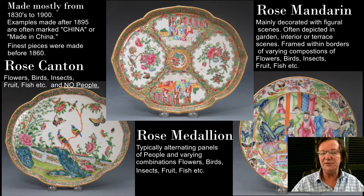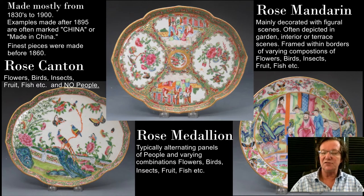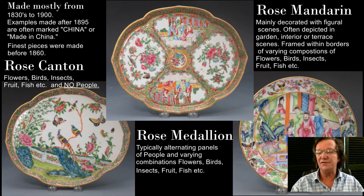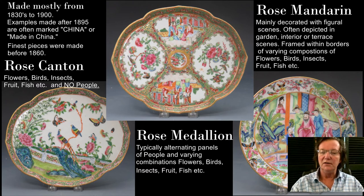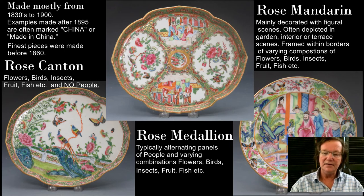The finest pieces were made between 1830 and about 1860. Last on the right is rose mandarin, and rose mandarin typically only has figural scenes like this. That's all you see on them, and the borders will be done with flowers, fish, insects, butterflies, fruit, all kinds of other things, but the main component is always people. So you have always flowers and fruit, or always people, or a combination of the three in medallion.